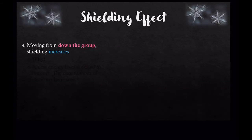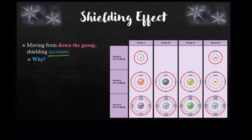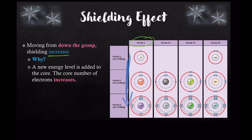Now let's take a look at what happens to shielding effect when we move down a group. Shielding effect increases when we move down a group. If you select group one and look at the elements that occupy this group going down, you'll notice that the size of the atom increases. The size of the atom is increasing due to added energy levels, and so the shield is also increasing.